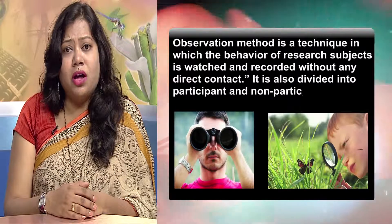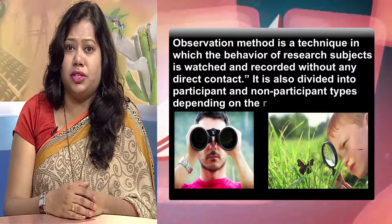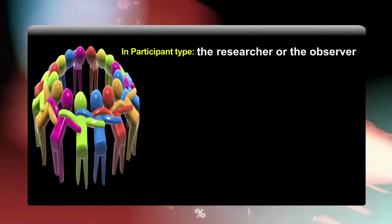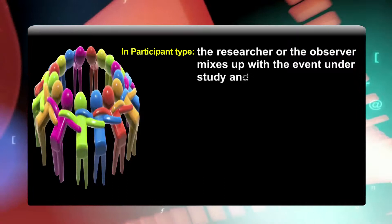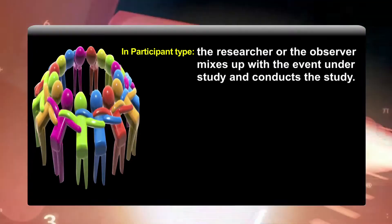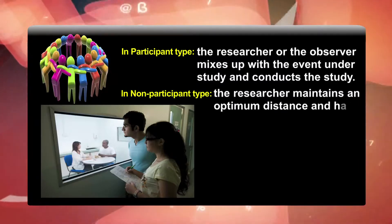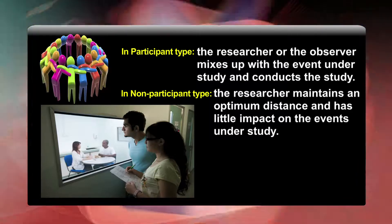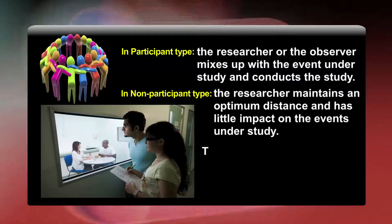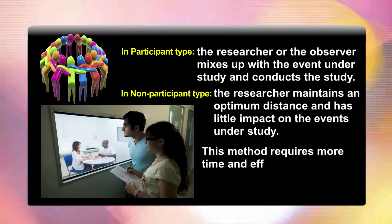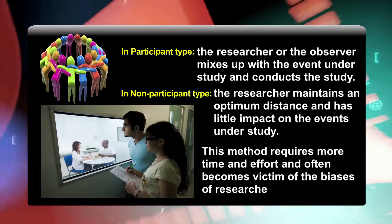Observation is also divided into participant and non-participant types depending on the role of the observer. In the participant type, the researcher or observer mixes up with the event under study and conducts the study. In the non-participant type, the researcher maintains an optimum distance and has little impact on the events under study. One main advantage of observation is that it studies the range of behaviors as they are happening. However, this method requires more time and effort and often becomes victim of the biases of the researcher.